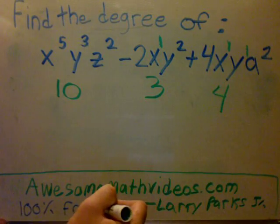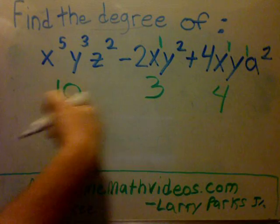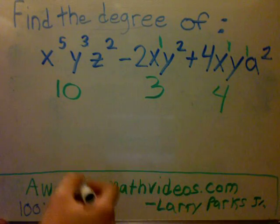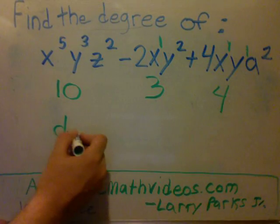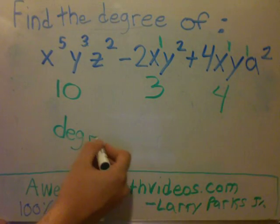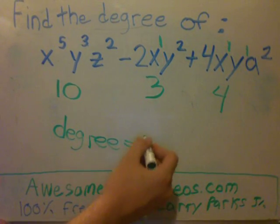And then all you do is you pick the biggest number. You have 10, 3, 4. The biggest number is 10. So our degree equals 10.